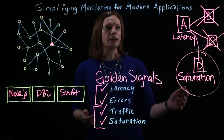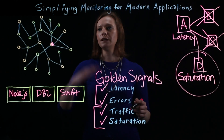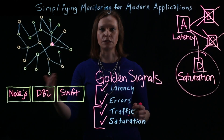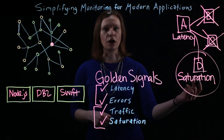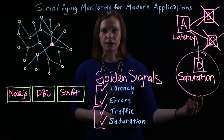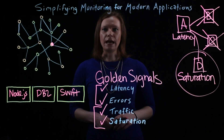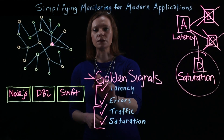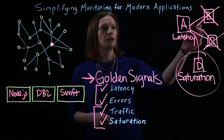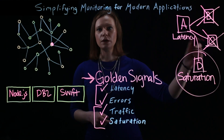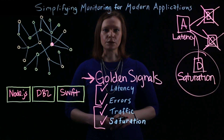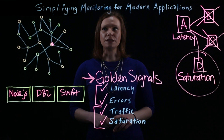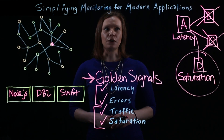As you can see, this process drastically improves the time it takes to go through a complex topology and many different technologies to figure out where the root cause is and how to fix it. When identifying an APM tool to use, make sure it offers the ability to use these golden signals and a one-hop dependency view, so you can quickly identify root causes and get your service restored as quickly as possible. Thanks for watching this video on simplifying monitoring for modern applications.